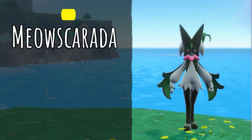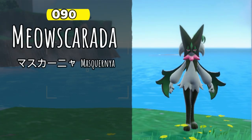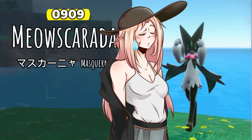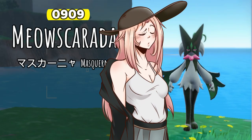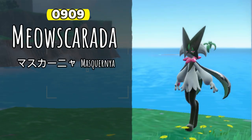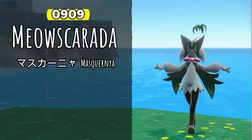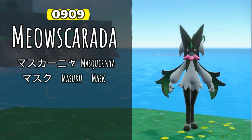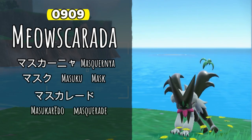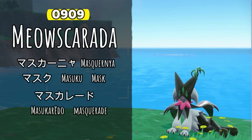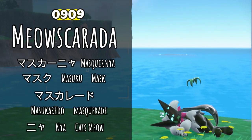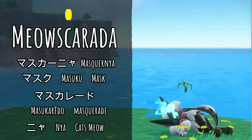Meowscarada's Japanese name is Maskanya. It's a little bit hard to pronounce. Maskra is derived from the katakana versions of the words mask and masquerade. And once again, Nya is still the sound a cat makes.